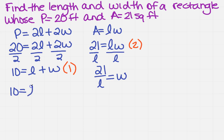I get 10 equals L plus 21 over L. I'm going to multiply through by L because I need to get rid of the denominator, so I've got 10L equals L squared plus 21.